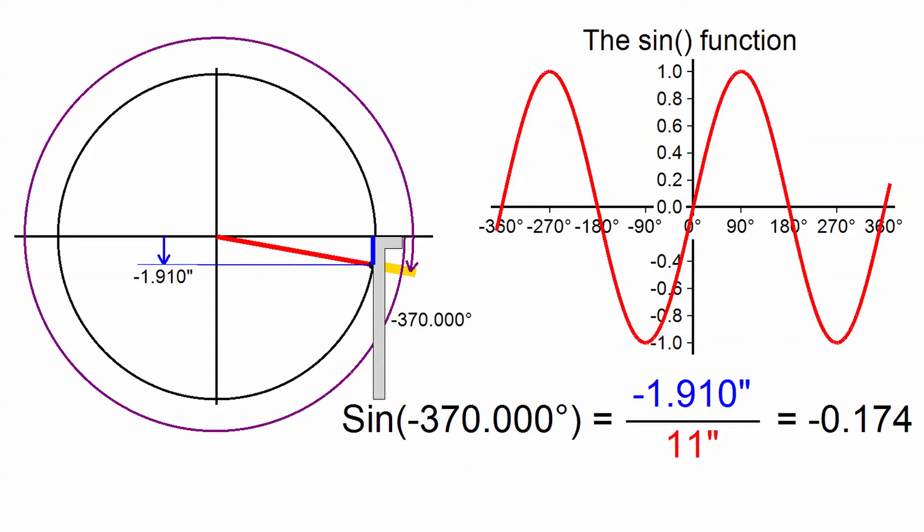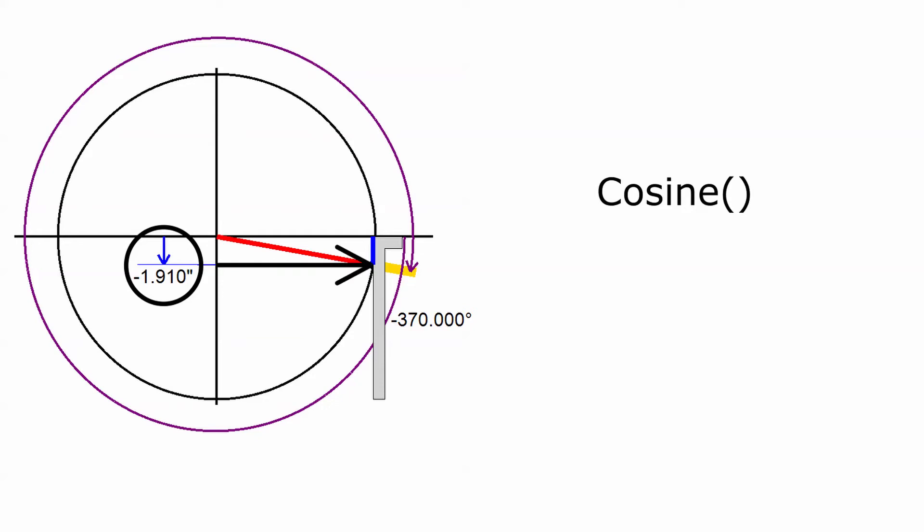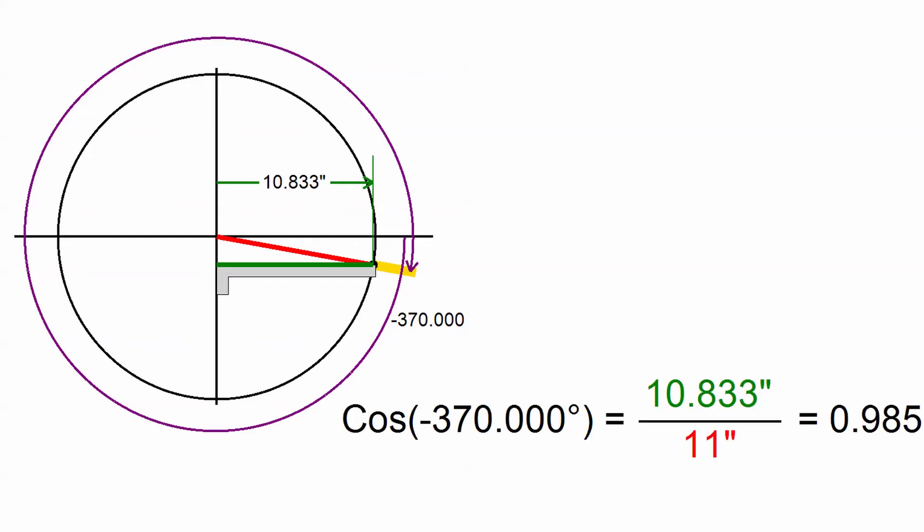Now let's put the sine function aside for a minute and talk about the cosine function. The sine function was based on measuring distances up from the horizontal line which passes through the wheel's center. The cosine function uses distances measured to the right of the vertical line through the center. I've turned the carpenter's square around so that it now slides up and down along the vertical line and measures this horizontal distance.